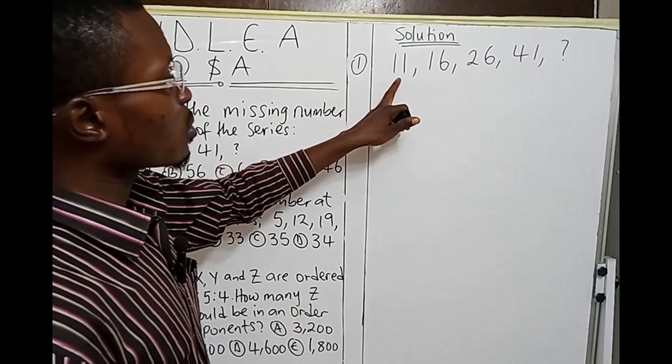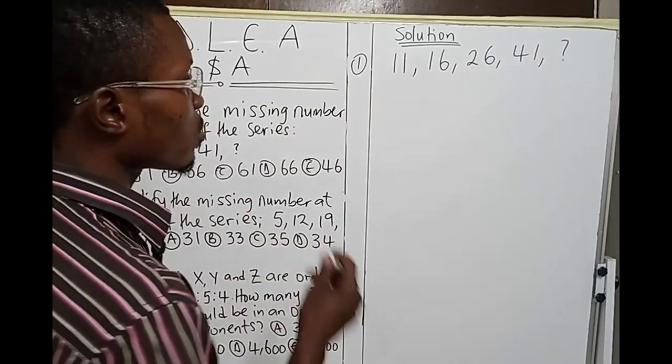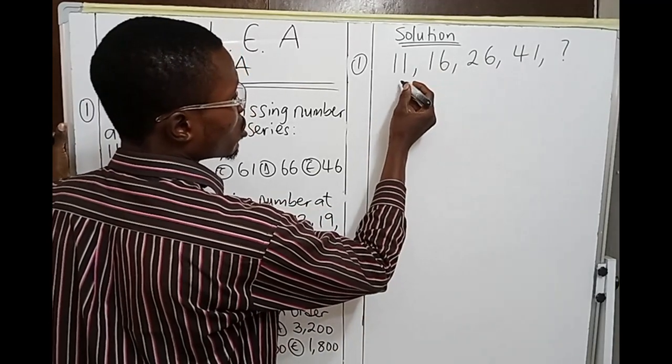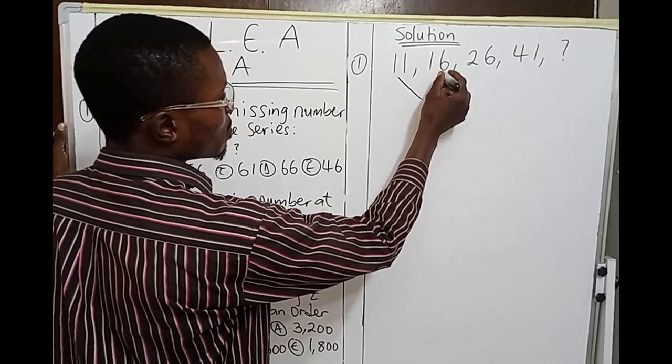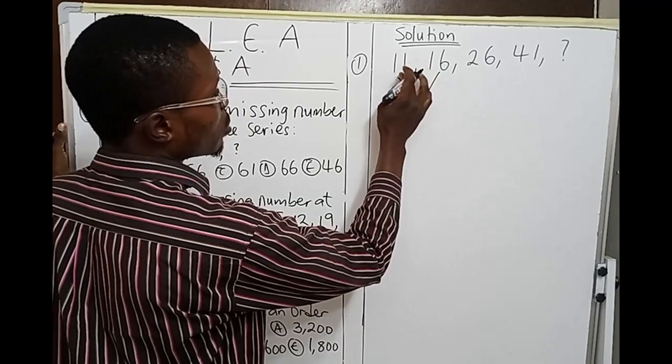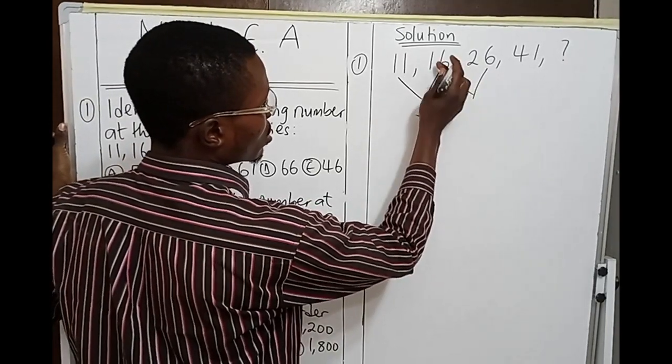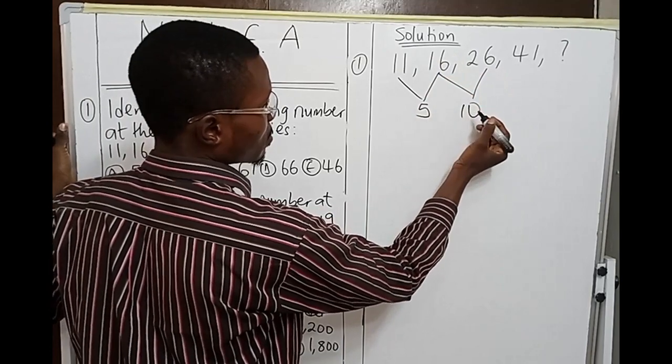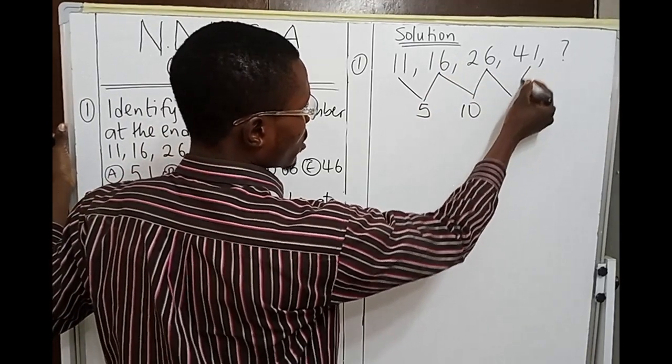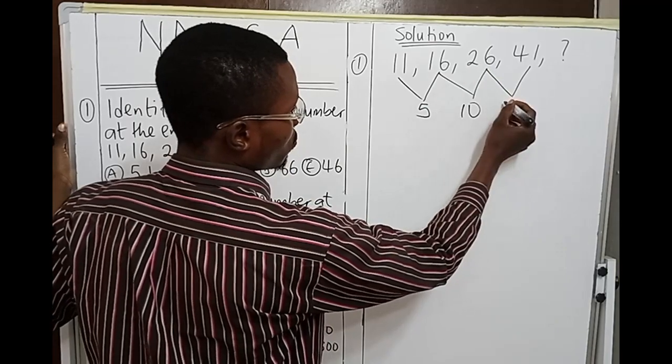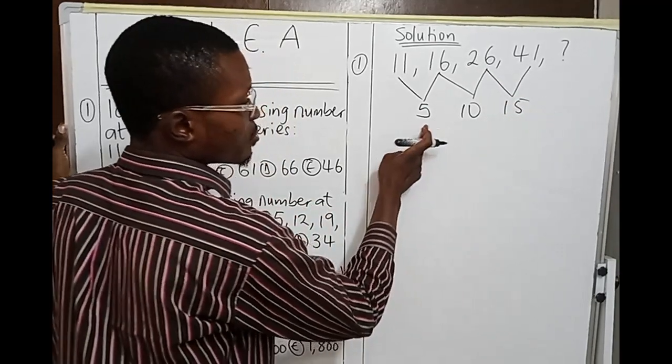To go about this, we're going to get the difference of each consecutive term. Let's observe the trend. The difference: 16 minus 11 is 5. You come to this, the difference 26 minus 16 is 10. You come to this difference, 41 minus 26 is 15. So if you observe the differences...